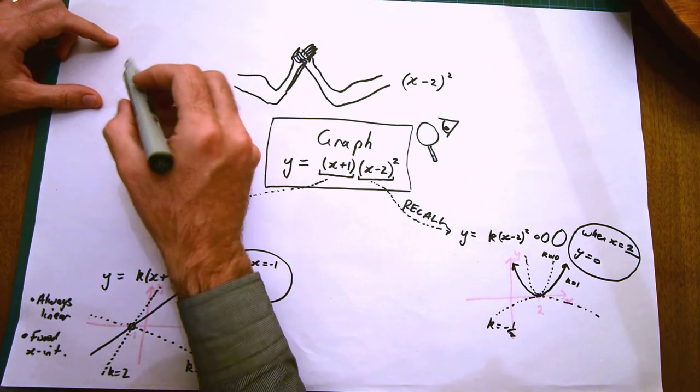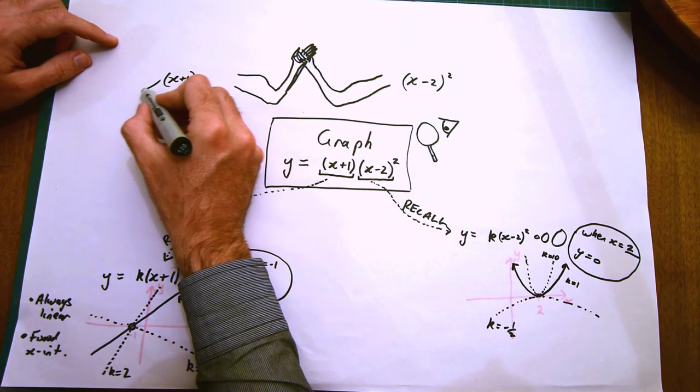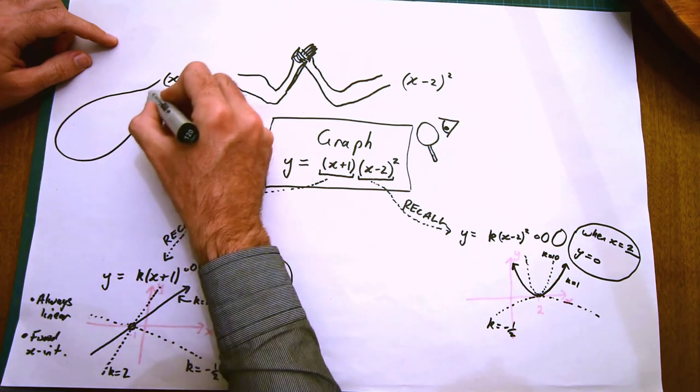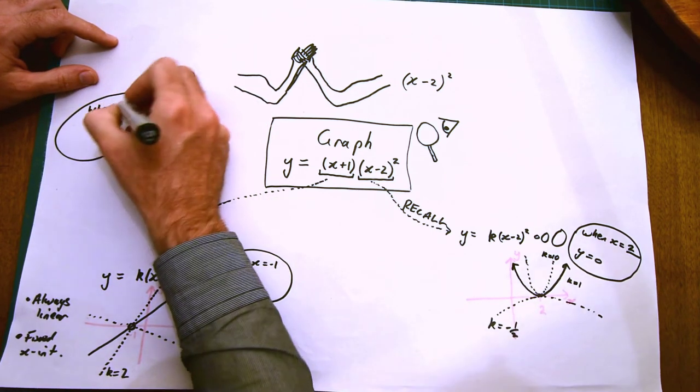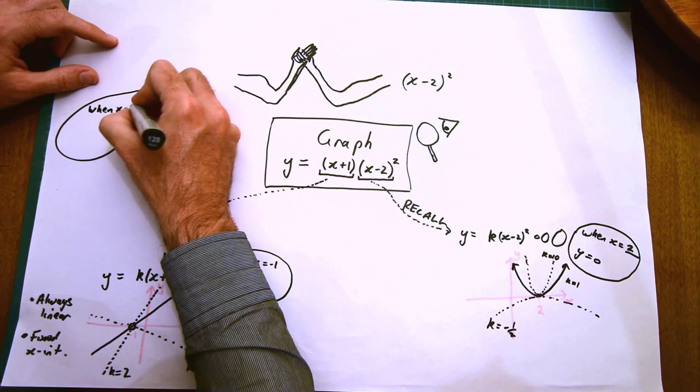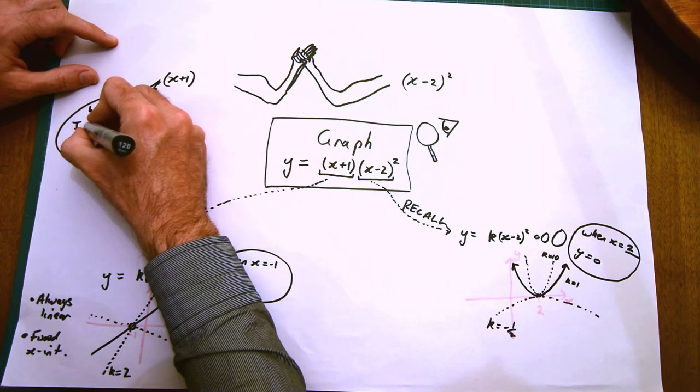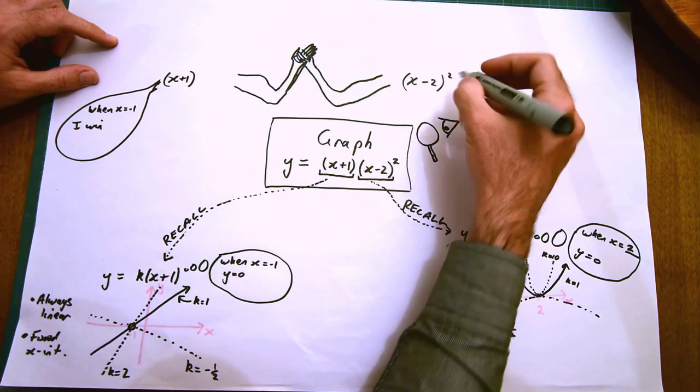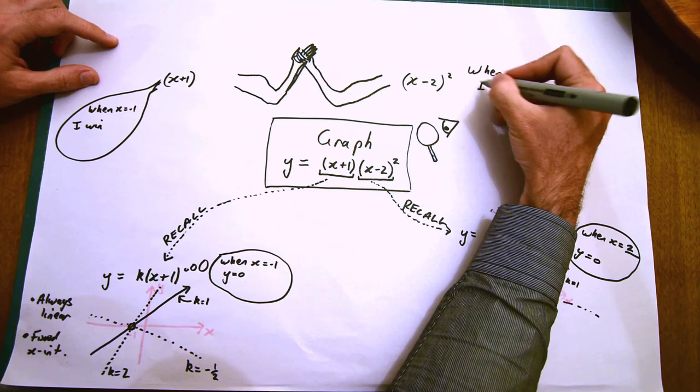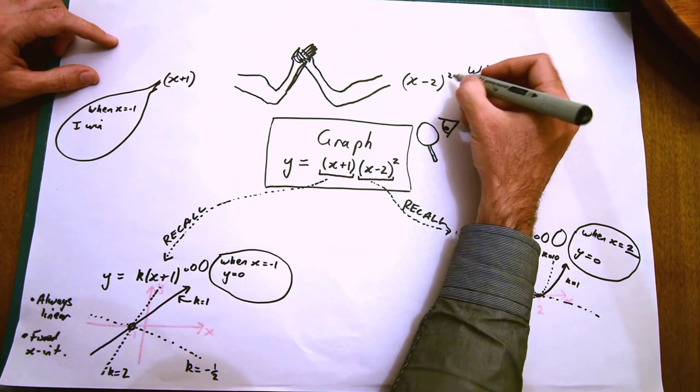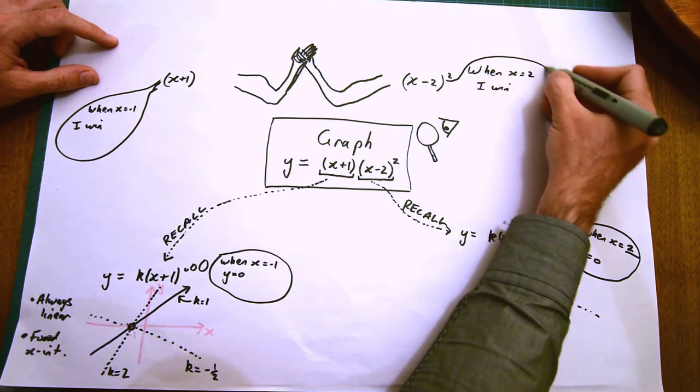There are clear situations in which x plus 1 must dominate, must control the behavior of the graph. When x is negative 1, it doesn't matter what the rest of the equation is. The other bit could be 10, could be a million, could be 157—y is equal to 0. Likewise, when x equals 2, it doesn't matter what the first part of the equation is. The x take 2 term will completely control the equation of the graph.